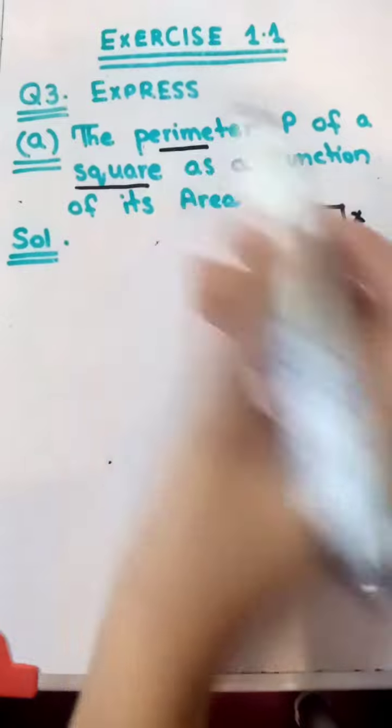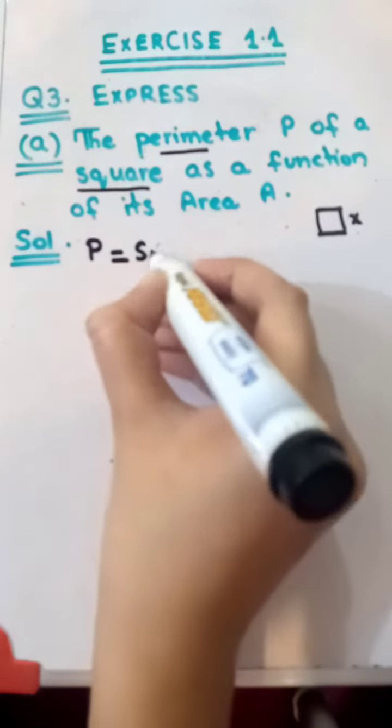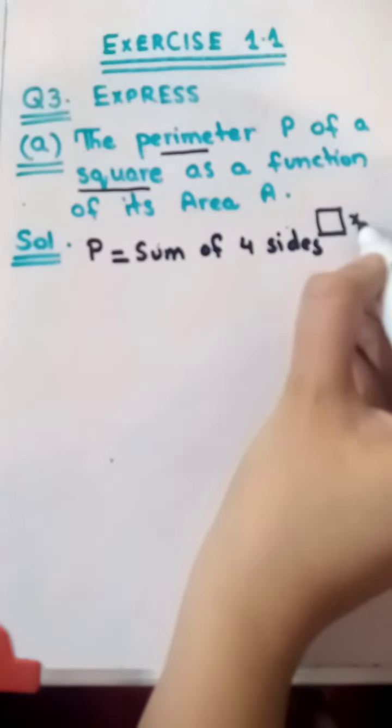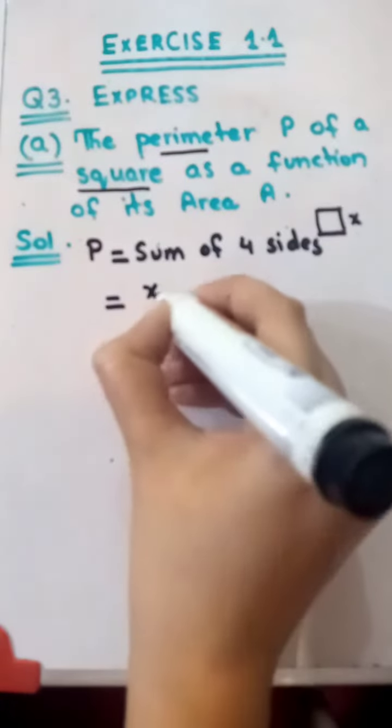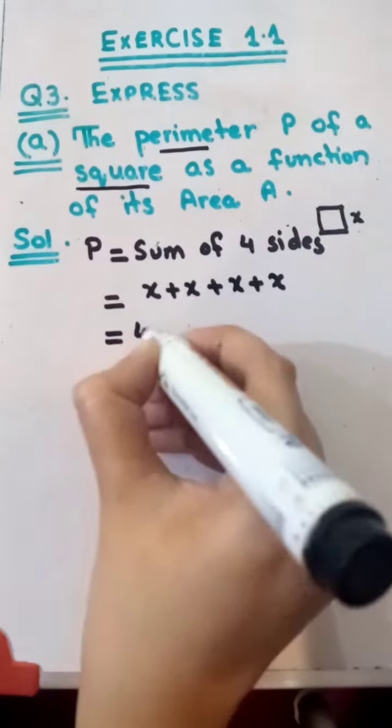What is the perimeter? Perimeter P is equal to the sum of four sides. As we denote x as one side, then the sum of four sides will be x plus x plus x plus x. It will be equal to 4x.